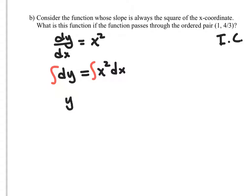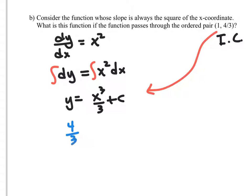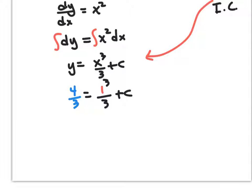On the left side I get y. On the right side I get x-cubed over 3 plus c. Initial condition entry: when x equals 1, y equals 4/3. So we get 4/3 is equal to 1 cubed over 3 plus c. So 4/3 equals 1/3 plus c. Therefore c equals 3/3, which is 1.